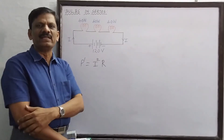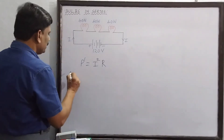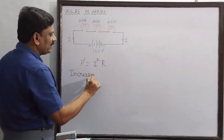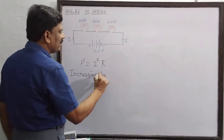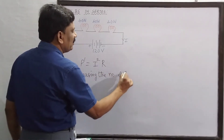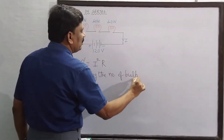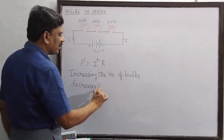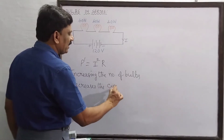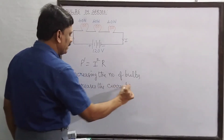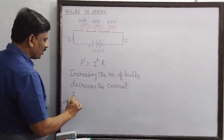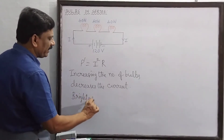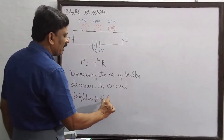Increasing the number of bulbs decreases the current, and as a consequence, the brightness of each bulb decreases.